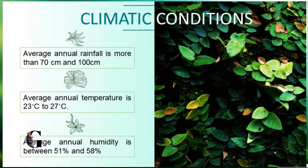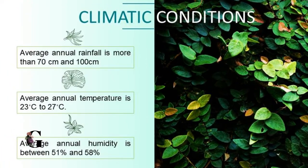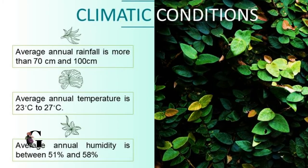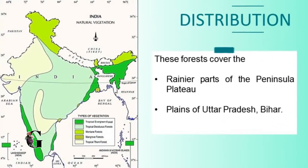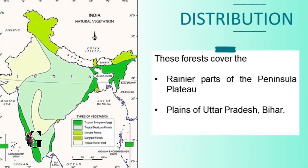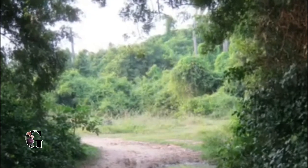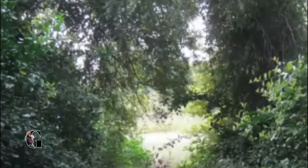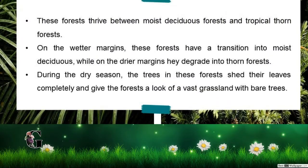This brings us to the second type of deciduous forest — the dry deciduous forest. Dry deciduous forests are found in areas having rainfall between 70 to 100 centimeters and an average temperature of around 23 to 27 degrees Celsius. These forests are found in the rainier parts of the peninsular plateau and the plains of Bihar and Uttar Pradesh.